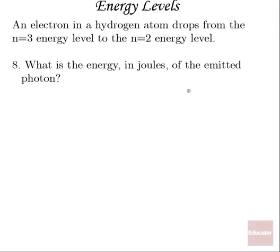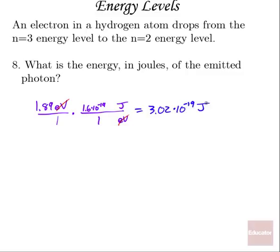Number eight says, what's the energy in joules of that emitted photon? So we're going to take 1.89 electron volts, and we need to convert that into joules. So if I want electron volts to go away, I put that in the denominator. I want joules, I put that in the numerator. And I know one electron volt is 1.6 times 10 to the minus 19 joules. My electron volts will make a ratio of one. Therefore, I'm going to be left with 1.89 times 1.6 times 10 to the minus 19 units joules, which will give us 3.02 times 10 to the minus 19 joules.